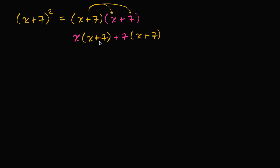Now we can apply the distributive property again. We take this magenta x and distribute it over the (x + 7). So x times x is x², and x times 7 is 7x. Then this 7 times that x is plus another 7x, and 7 times 7 is 49.